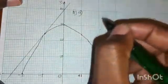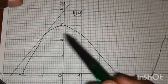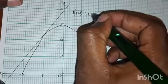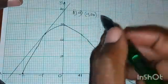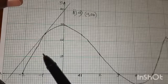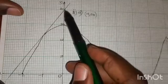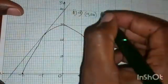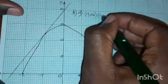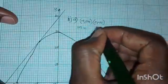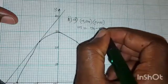Pick points that are obvious on the graph. The second point we choose is (0, 40), which is easy to read. To find the gradient, we use the formula: m = (y2 − y1) / (x2 − x1). We label (−1, 24) as point 1 and (0, 40) as point 2.